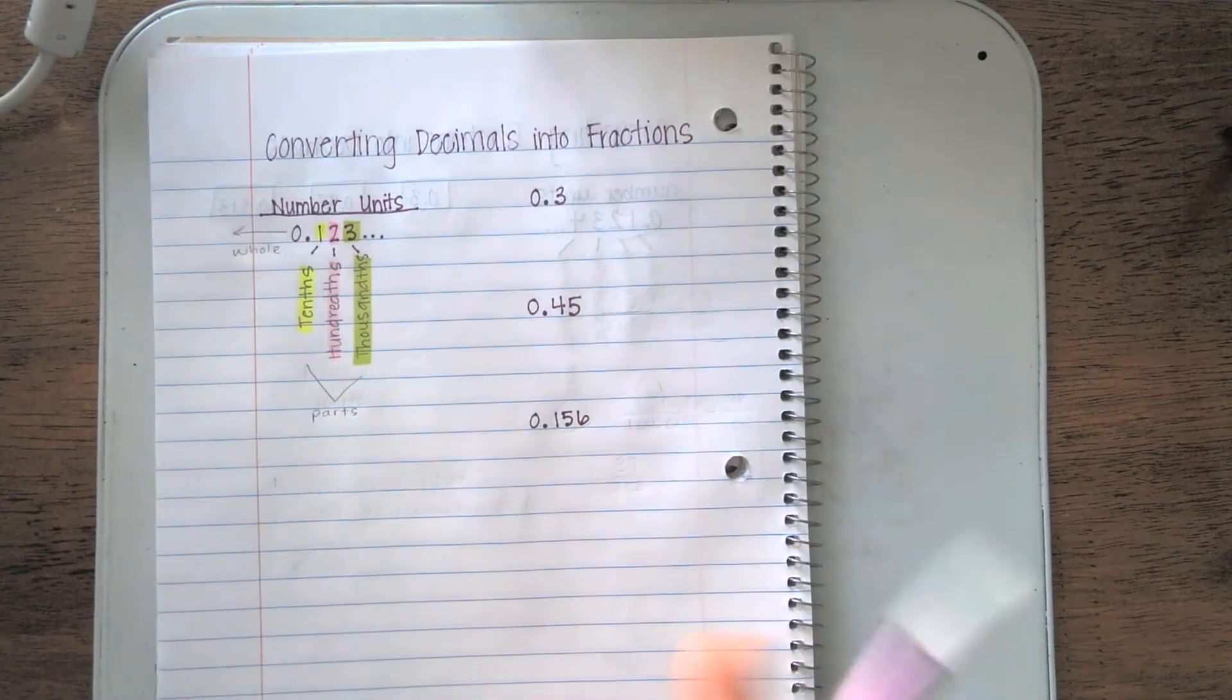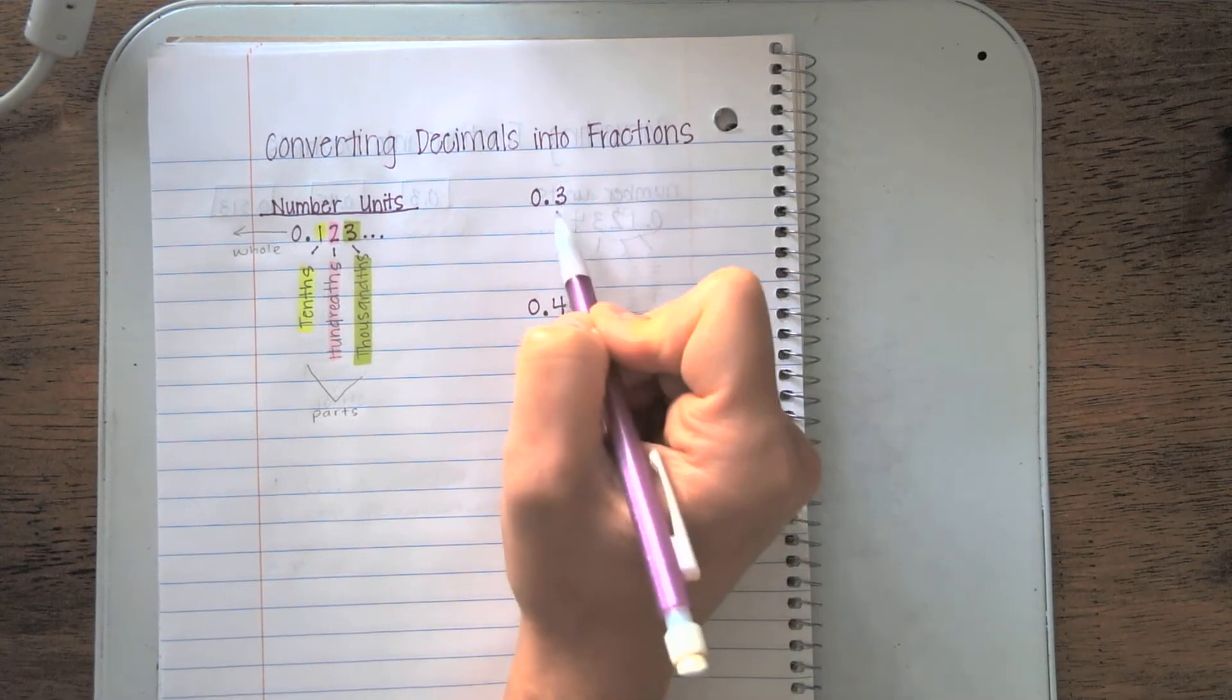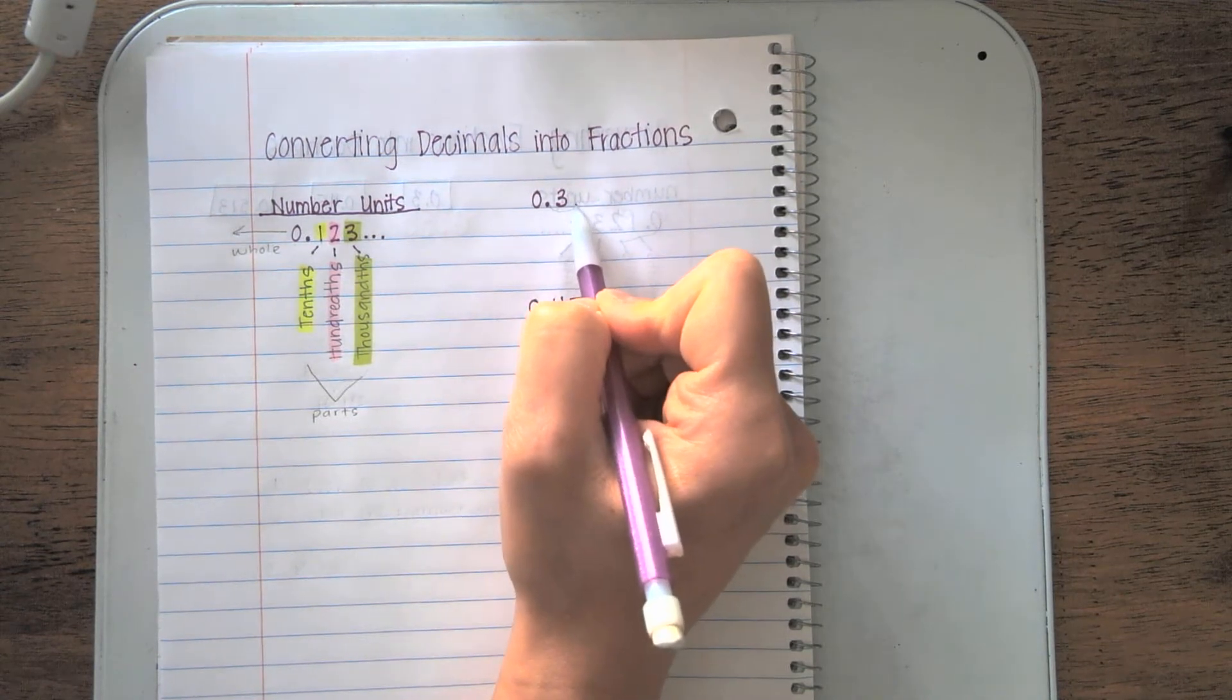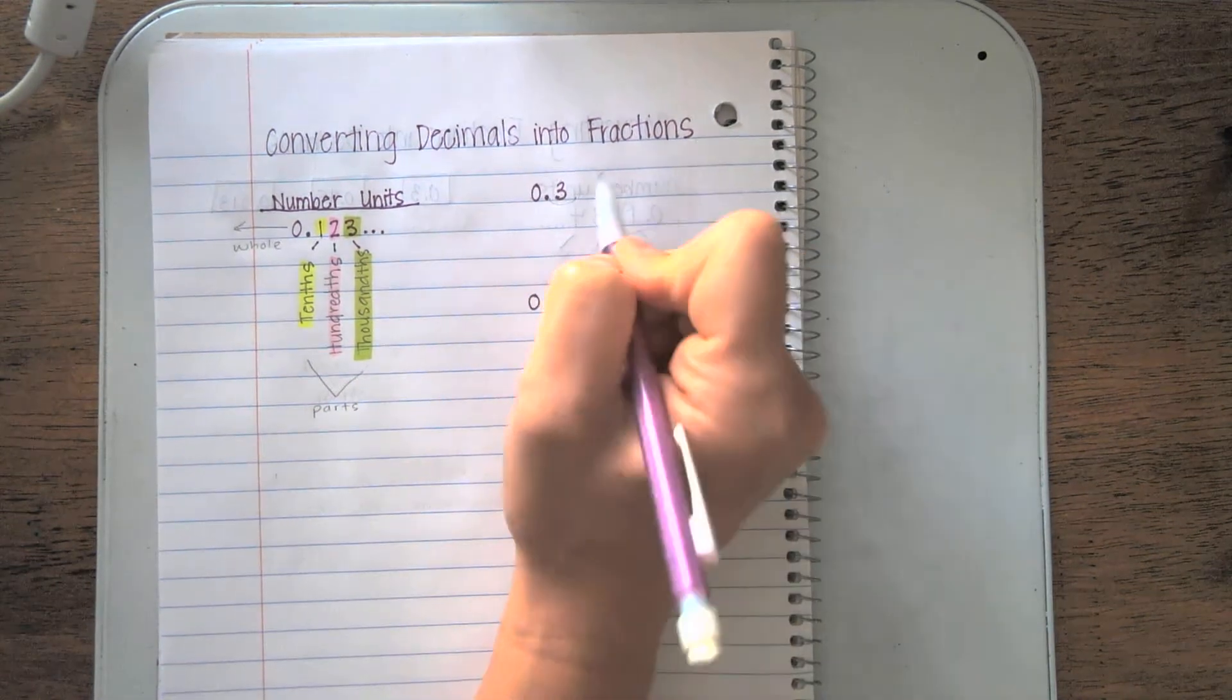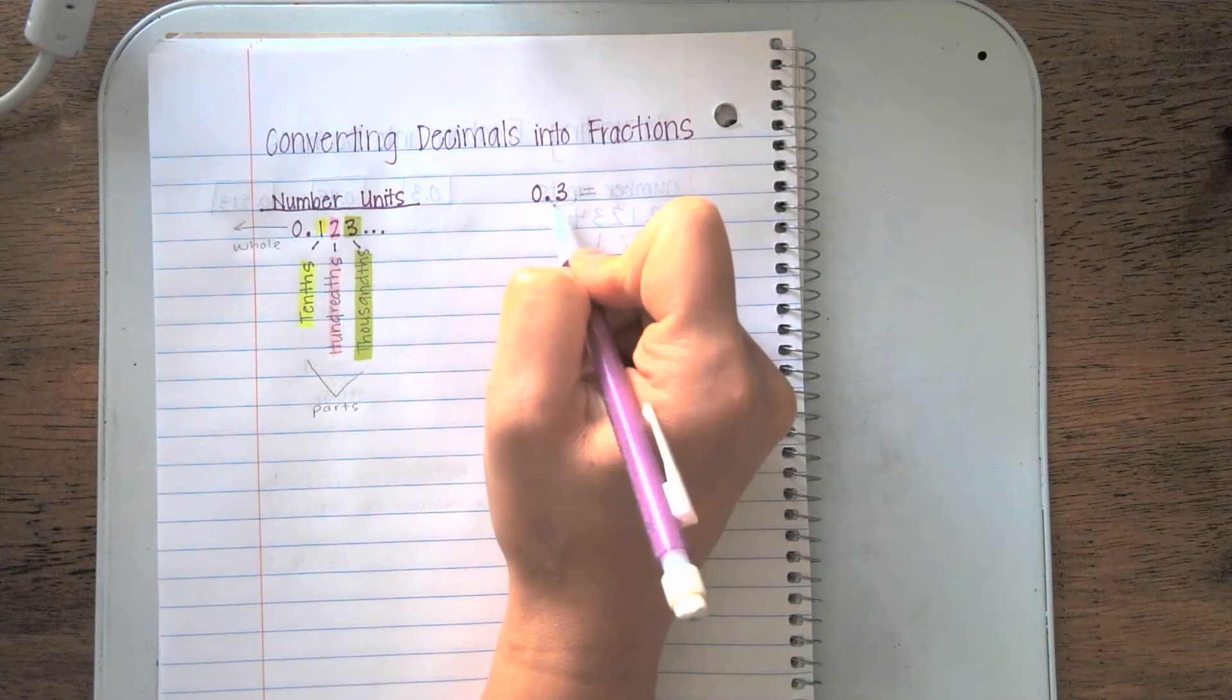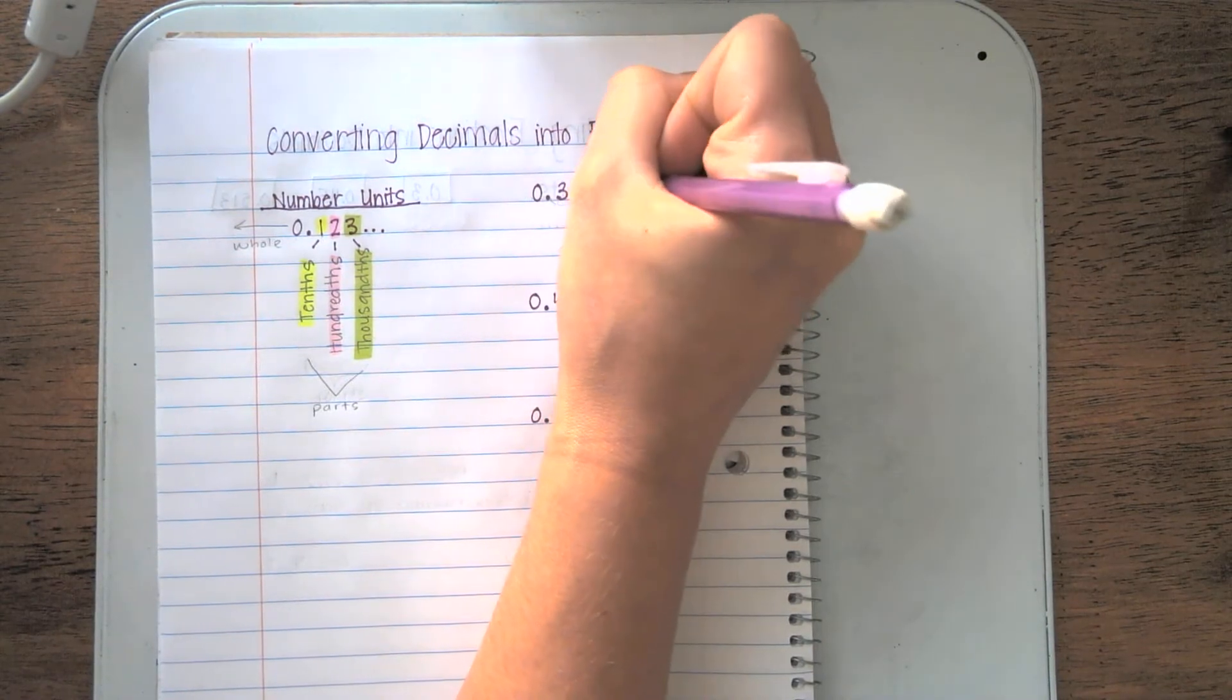Let's look at some examples. The first example I see is 0.3. This number goes one unit to the right. I know that one unit to the right is tenths. This helps me know how to set up my fraction. I know it's in the tenth place, so I'm going to put 10 in my denominator.